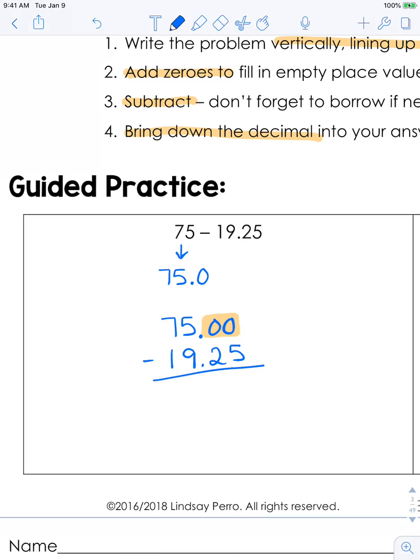Now we're going to subtract the correct way. We're going to have to borrow all the way across and now we'll subtract. So you get 55.75.